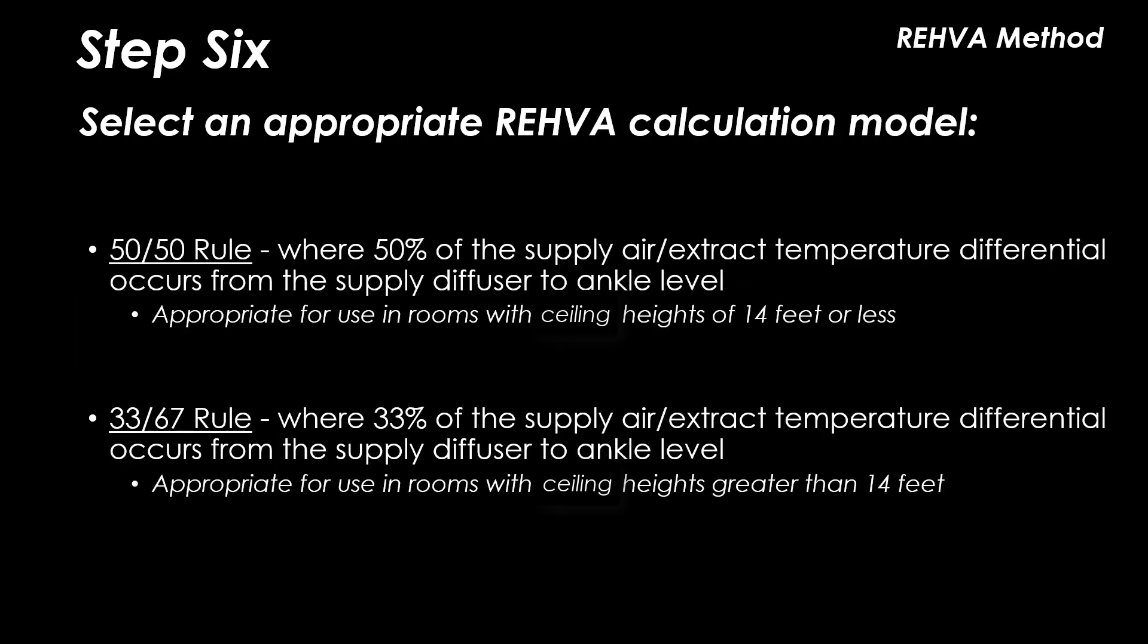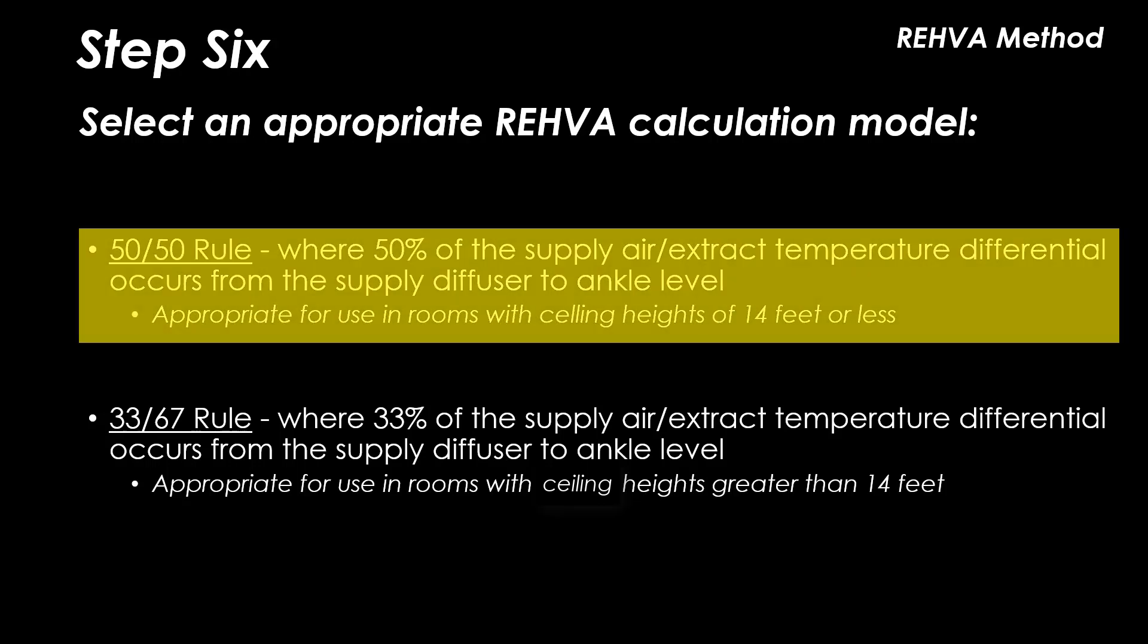In step six we will choose an appropriate REHVA calculation model based on the room height. There are two models. One that refers to rooms with a normal ceiling height, which can be taken as around 14 feet. The second model refers to rooms with high ceilings, which should be applicable for entrance lobbies, airports and atria. We will be using the 50-50 rule as our classroom has a ceiling height below 14 feet.